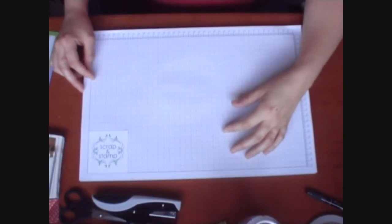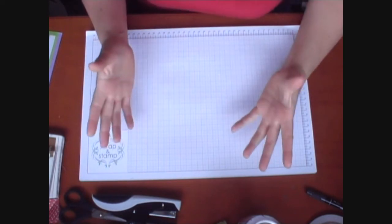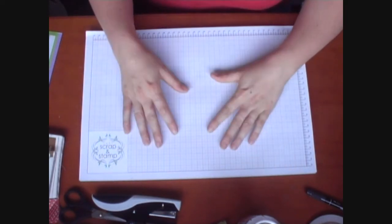Welcome to Just Scrap and Stamp. Today's project is a little phone address book you can keep in your handbag or pop in your kids' bags to have in case they need one.